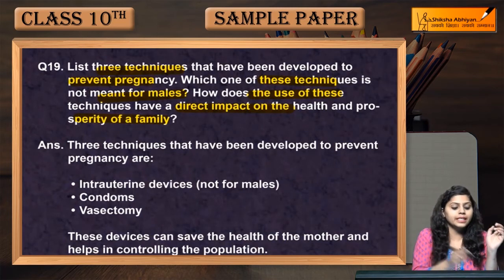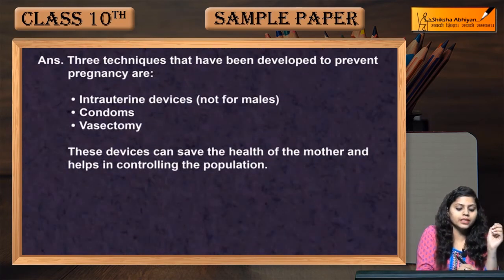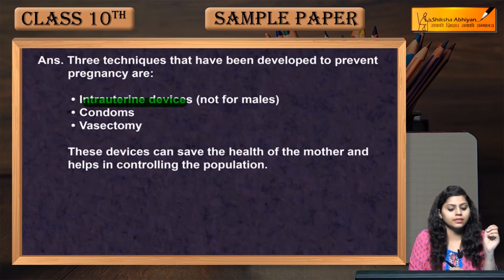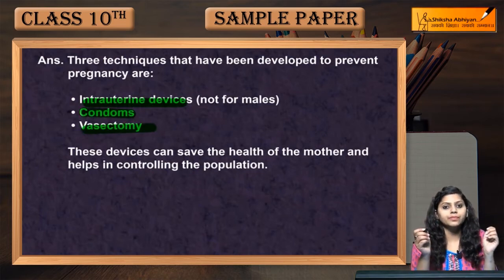The three techniques that prevent pregnancy are intrauterine devices, condoms, and vasectomy.